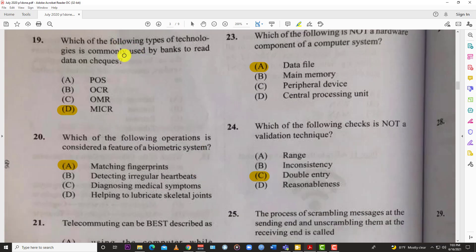Number nineteen: which of the following types of technologies is commonly used by banks to read data on checks? The best answer is D, MICR - Magnetic Ink Character Recognition.